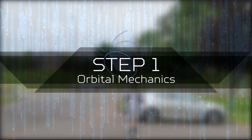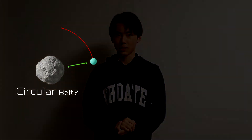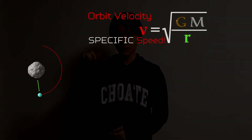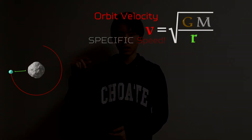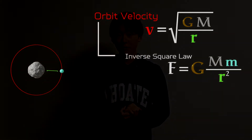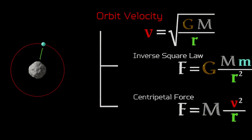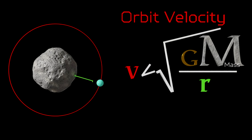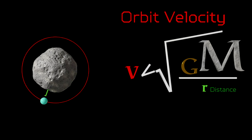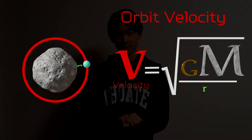Step 1: orbital mechanics. For a particle to form a circular belt, it must have a specific speed, modeled by Newton's square law of gravity and the centripetal force. To orbit, the greater the asteroid's mass and the shorter the distance, the faster the particle should be.